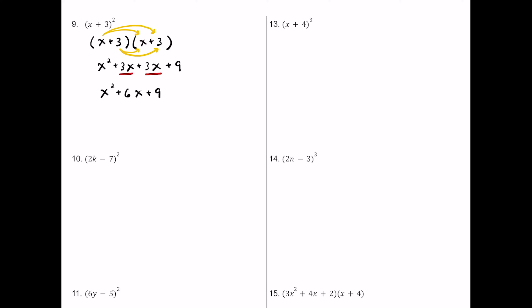For number ten, we have the quantity 2k minus 7 squared. We write it as 2k minus 7 multiplied by 2k minus 7. Distributing the first 2k: 2 times 2 is 4, k times k is k squared, giving 4k squared. Then 2k times negative 7 is negative 14k.